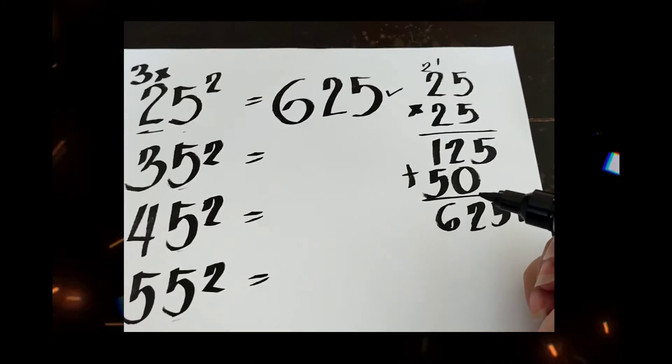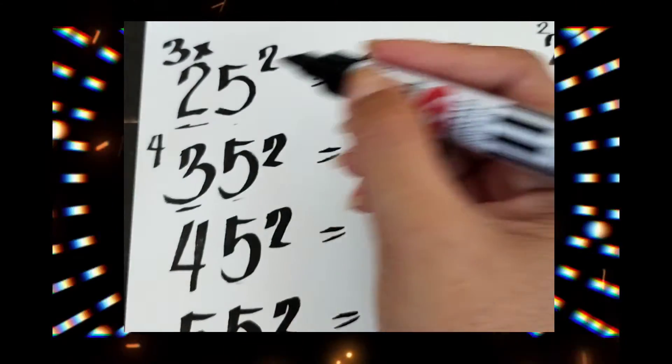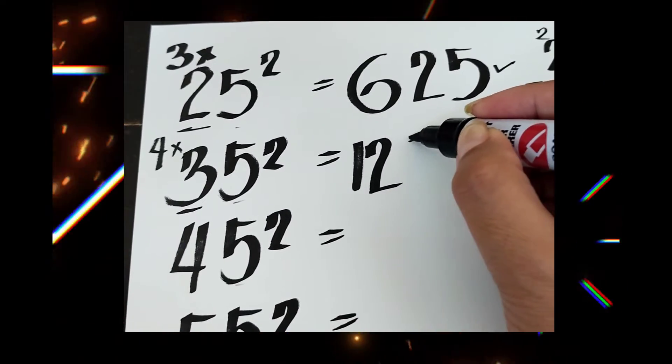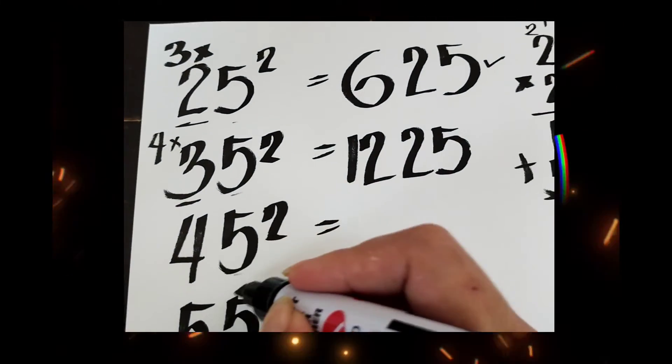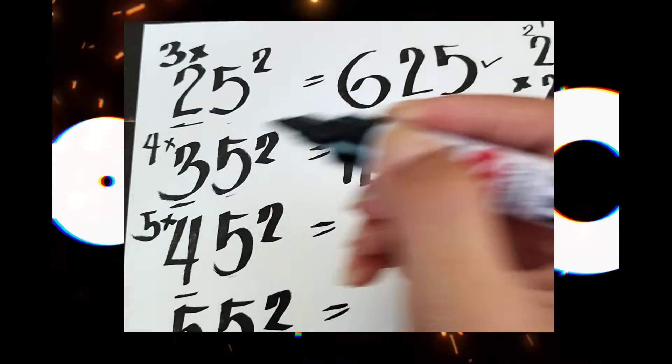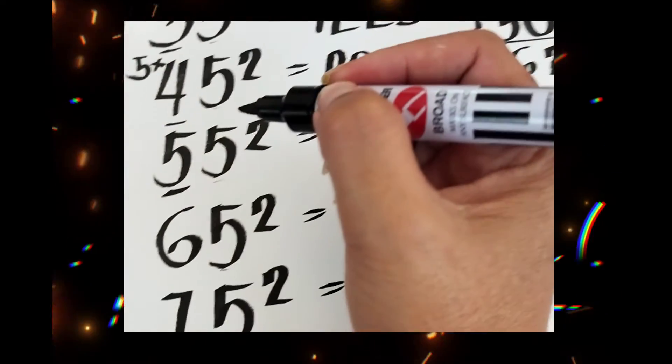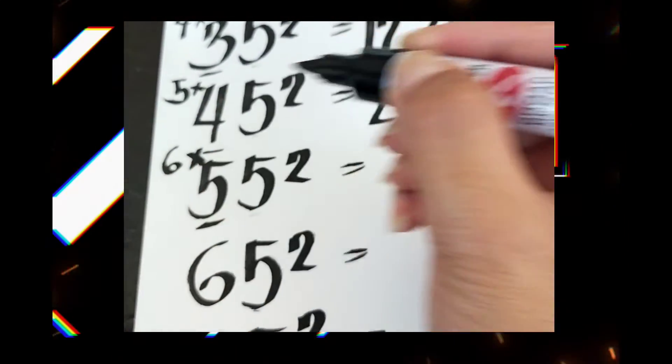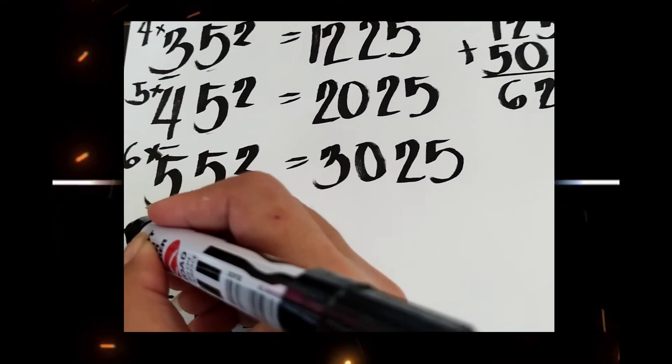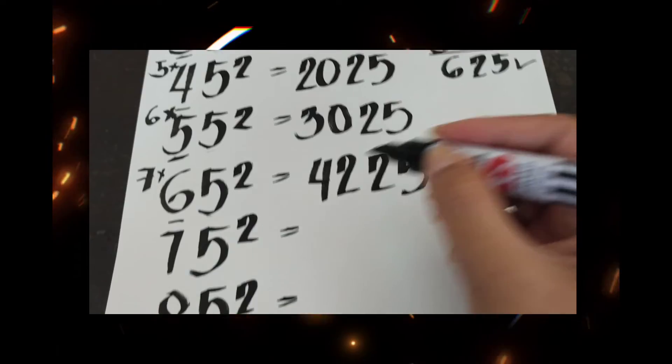Now the second number: which number comes after 3? It's 4. So 4 times 3 is 12. Now 5 squared is 25. Next, which number comes after 4? It's 5. 5 times 4 is 20, so 5 squared is 25. Next, which number comes after 5? It's 6. 6 times 5 is 30. 5 squared is 25. Next, which number comes after 6? It's 7. 7 times 6 is 42. 5 squared is 25.